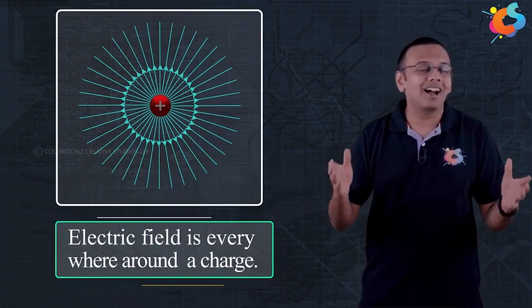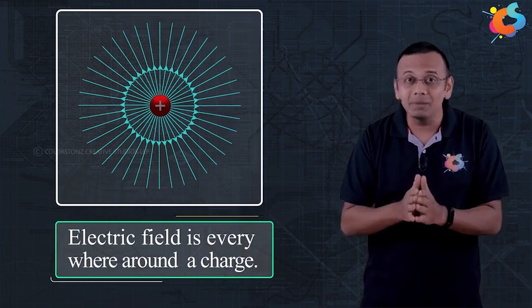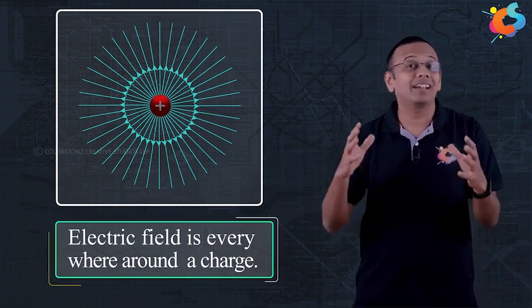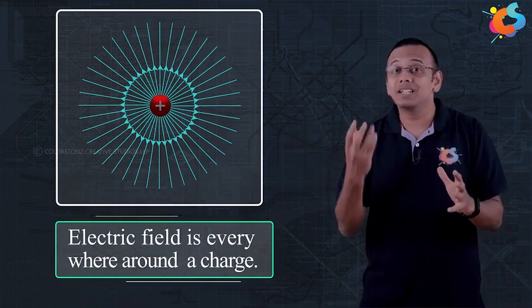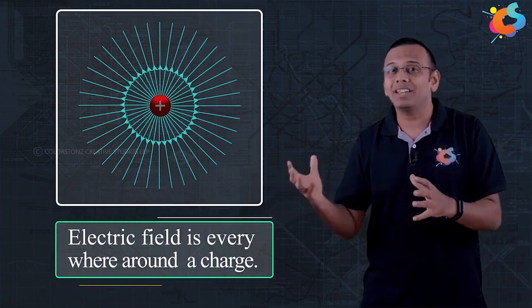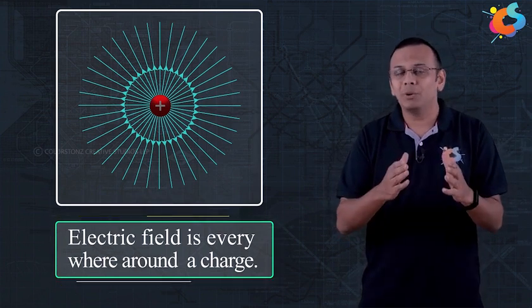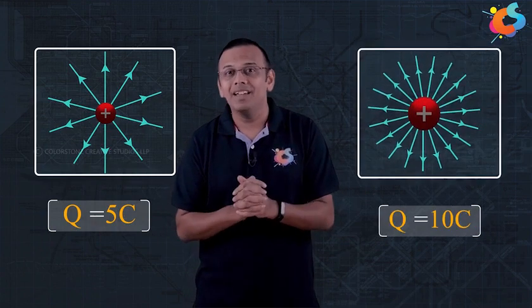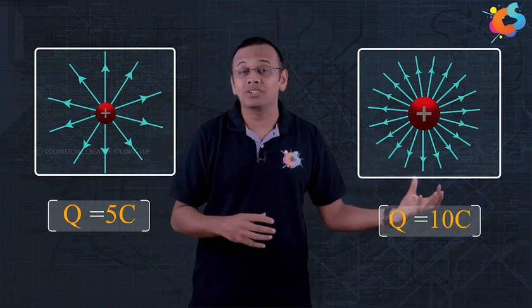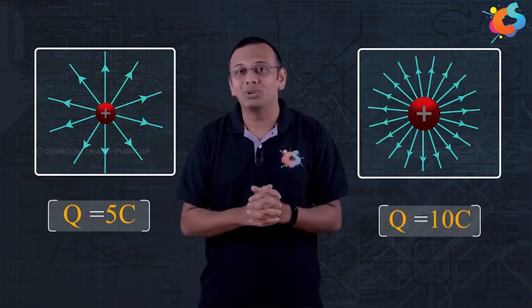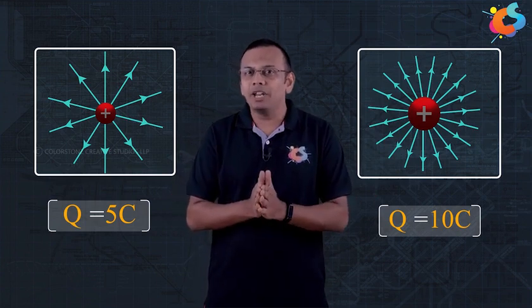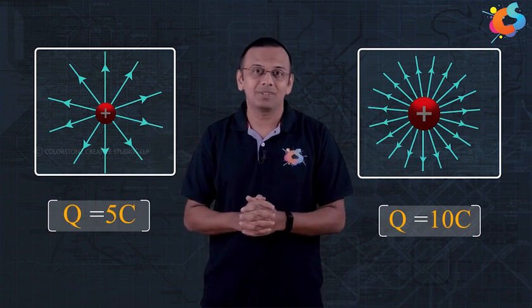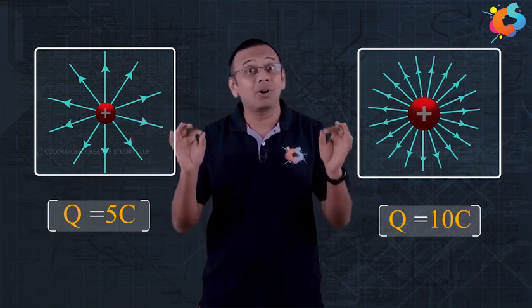Obviously, we can't draw infinitely many field lines. Remember that the main purpose here is to visualize, to picturize the electric field around this charge. Instead, what we can do is use the number of field lines to signify the magnitude of charge or the strength of the electric field. Suppose this charge has a lesser magnitude and another charge has a greater magnitude — we can show more field lines around the larger charge to signify that it has a greater strength. This is how we draw electric field lines around a positive point charge.